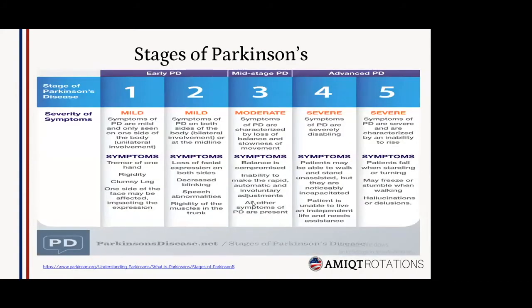The stages of Parkinson's disease include early, mid, and advanced stages. Mild (early) symptoms begin with tremor of one hand, rigidity, clumsy leg, loss of facial expression on both sides, decreased blinking, and speech abnormalities. This progresses to moderate symptoms: compromised balance and inability to make rapid, automatic, involuntary adjustments. Advanced disease leaves patients unable to stand or walk unassisted, with activities of daily living severely affected. The most severe stage sees patients fall when standing or turning, freezing or stumbling when walking, and suffering from hallucinations or delusions.